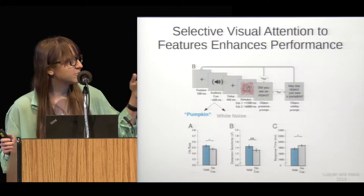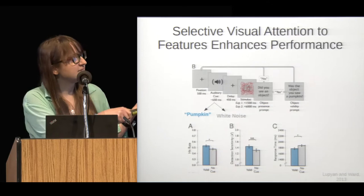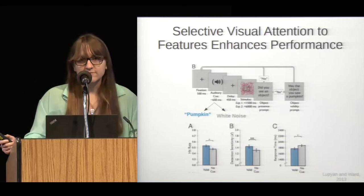They're then shown this challenging visual stimulus and need to determine if the given object was in the visual stimulus or not. On alternative trials, instead of hearing this word about the object, they're just played a white noise stimulus.